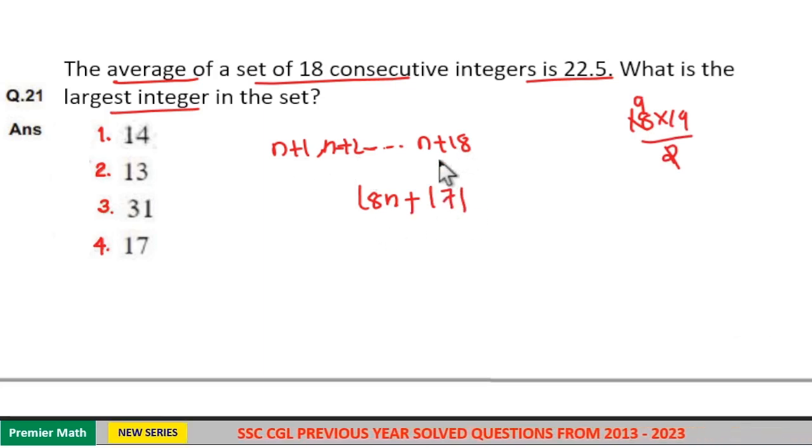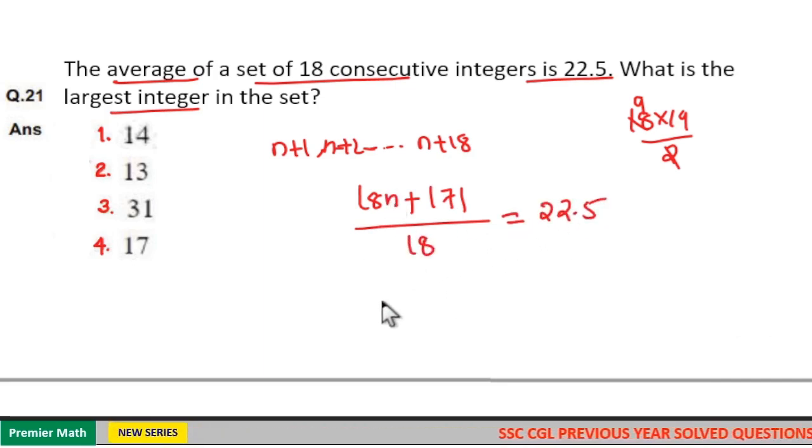So the sum of 18 numbers is equal to 18n plus 171 divided by the total numbers, which is 18. So this is the average. The average is equal to 22.5.